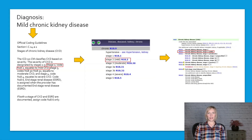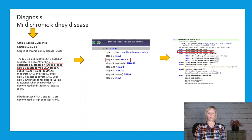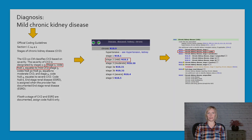Here we have a diagnosis of mild chronic kidney disease. Remember, the guideline tells us that Stage 2 CKD equates to mild CKD. So when we look up chronic kidney disease in the alphabetic index, we know that we can select Stage 2 for a diagnosis of mild chronic kidney disease.